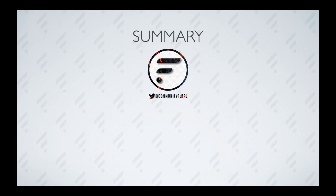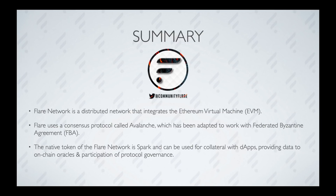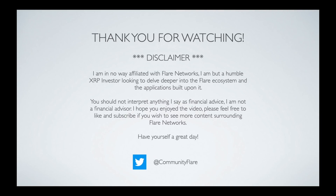So let's summarize. The Flare Network is a distributed network that integrates with the Ethereum Virtual Machine. Flare uses a consensus protocol called Avalanche, which has been adapted to work with Federated Byzantine Agreement. The native token of the Flare Network is SPARK, and it can be used for collateral with dApps, providing data to on-chain oracles, and participation in protocol governance. F-assets such as FXRP can be minted to bring smart contract functionality to the underlying asset. I hope this gives you a brief overview of the Flare Network, and in future videos I will be delving a little bit deeper into the system.